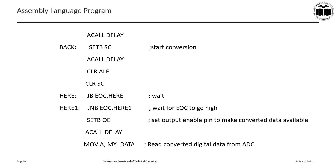Once conversion has started, we monitor the EOC bit. As long as EOC is not set, the program waits. The moment the current conversion gets over, program control transfers to SET OE, which makes the output enable signal high. As a result, the output of the ADC gets enabled and the converted digital output is made available on the output digital pins of the ADC.